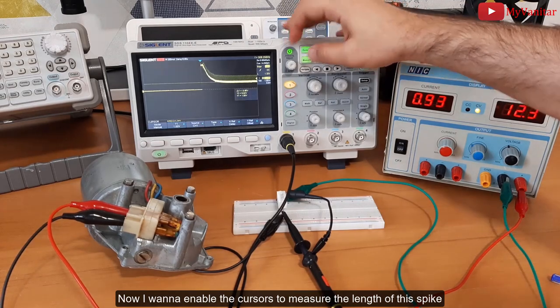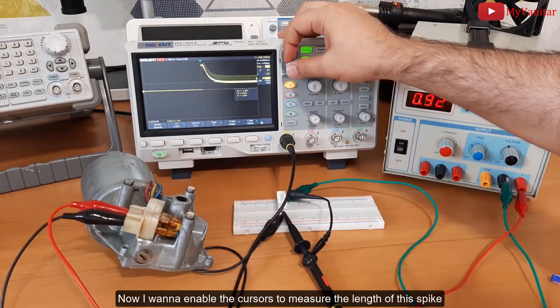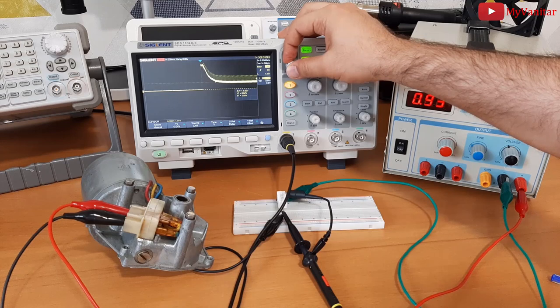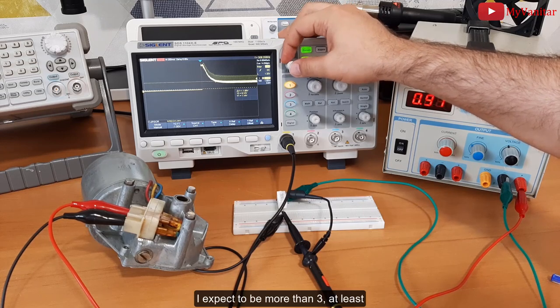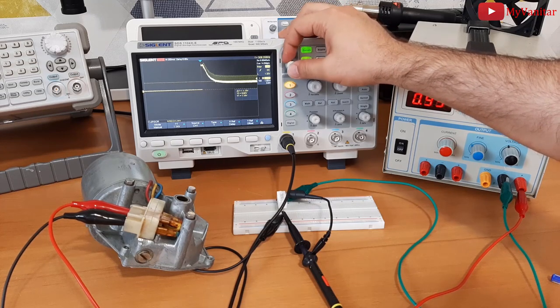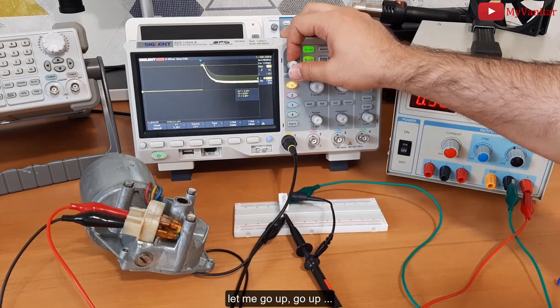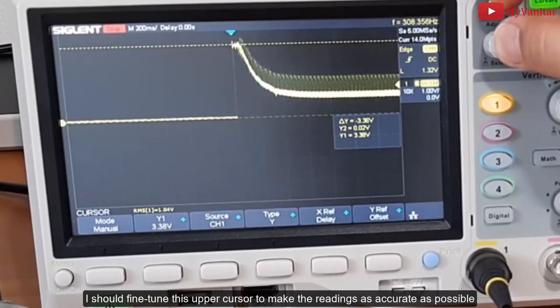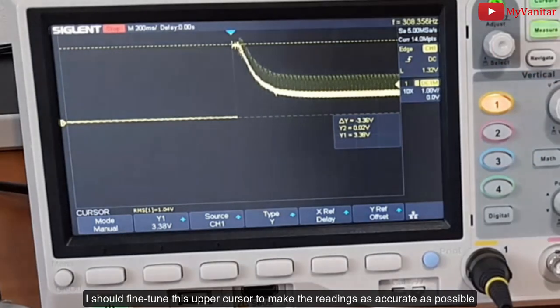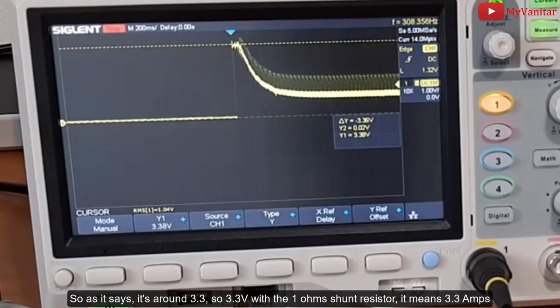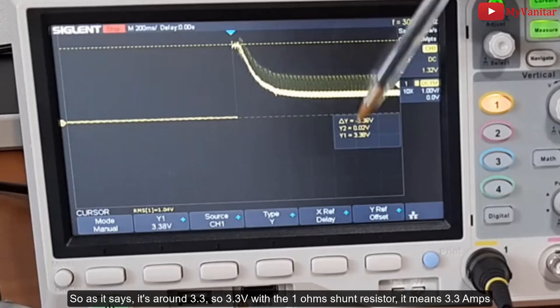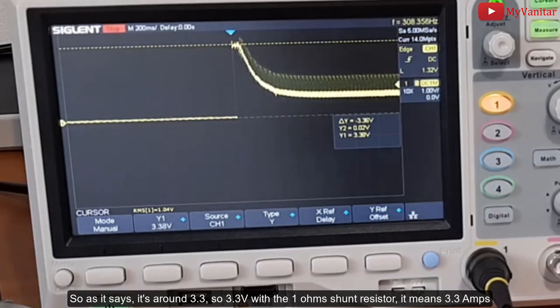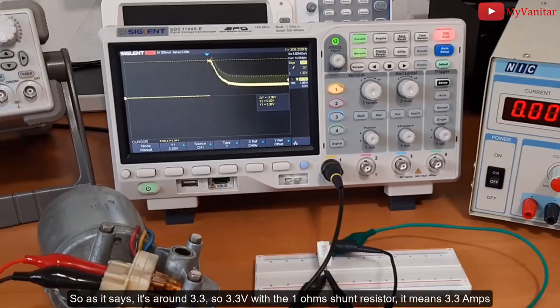the cursors to measure the length of this spike. I expect it to be more than three at least. Let me go up, go up. I should fine-tune this upper cursor to make the reading as accurate as possible. So as it says, it's around 3.3. So 3.3 volts with the one ohm shunt resistor, it